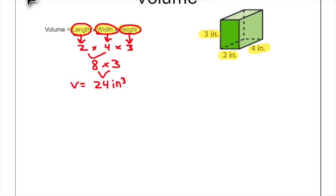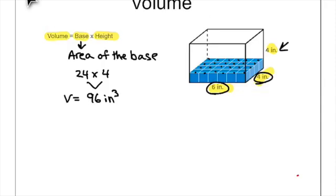Either formula will work to find volume — it just depends on what information you're given and what is easier for you. Remember, volume is the amount of space an object takes up, and it can be found using length times width times height, or base times height, where the base is the area of the base.